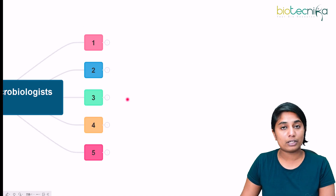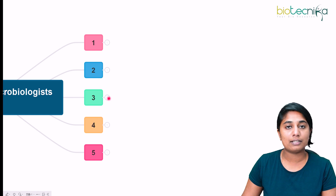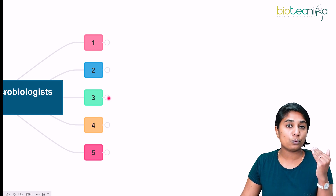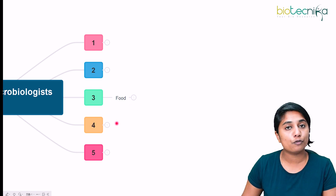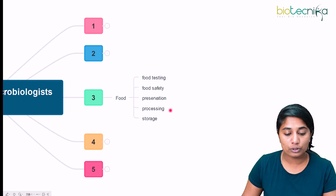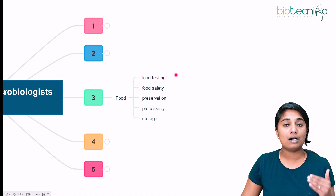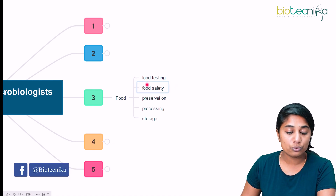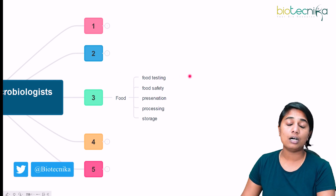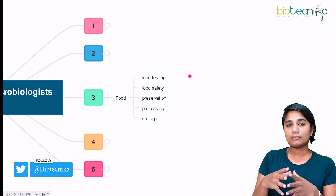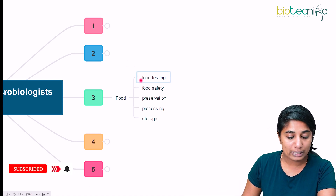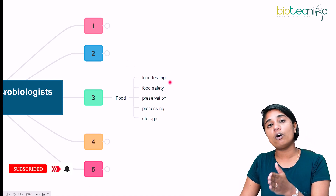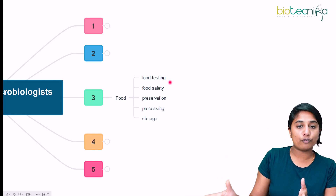The third sector is food. You can be involved in all steps of food — you can be a food testing officer or food safety officer, helping to analyze microbes that cause food spoilage. This is also called a quality assurance or quality analysis officer. Next is preservation, where microorganisms can be added to preserve food. Every food testing lab or food industry needs a microbiologist.